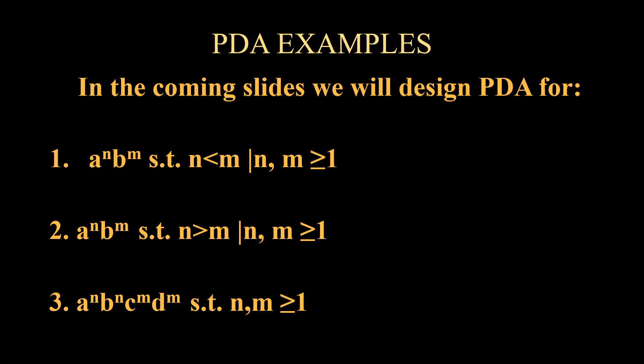Next is aⁿbᵐ such that n is greater than m, meaning the number of a's is greater than the number of b's. The third one is aⁿbⁿcᵐdᵐ, meaning the number of a's is equal to the number of b's, and the number of c's is equal to the number of d's.